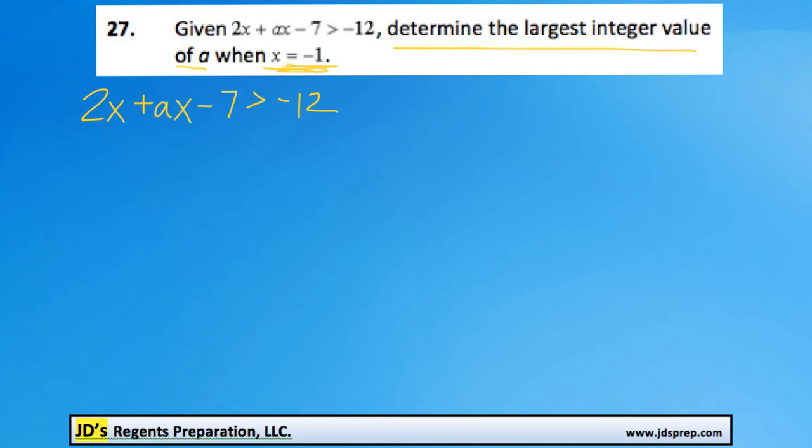Now that's the important part there, because right now we have two unknown variables in this inequality, so we can't solve it. But we know that we're supposed to replace x with negative 1. So let's go ahead and do that.